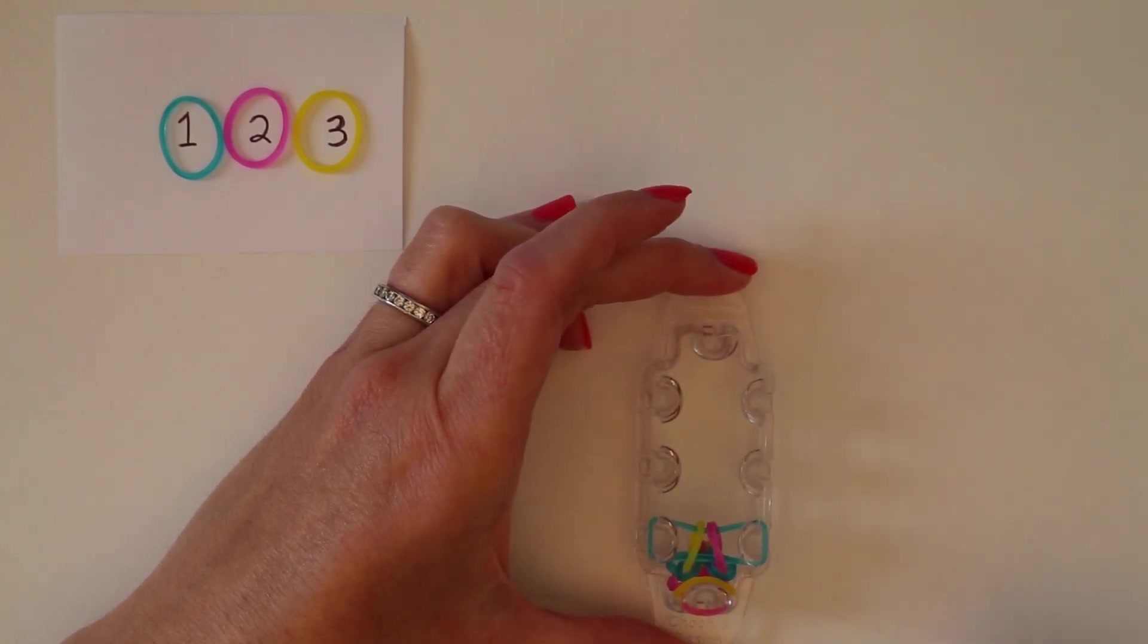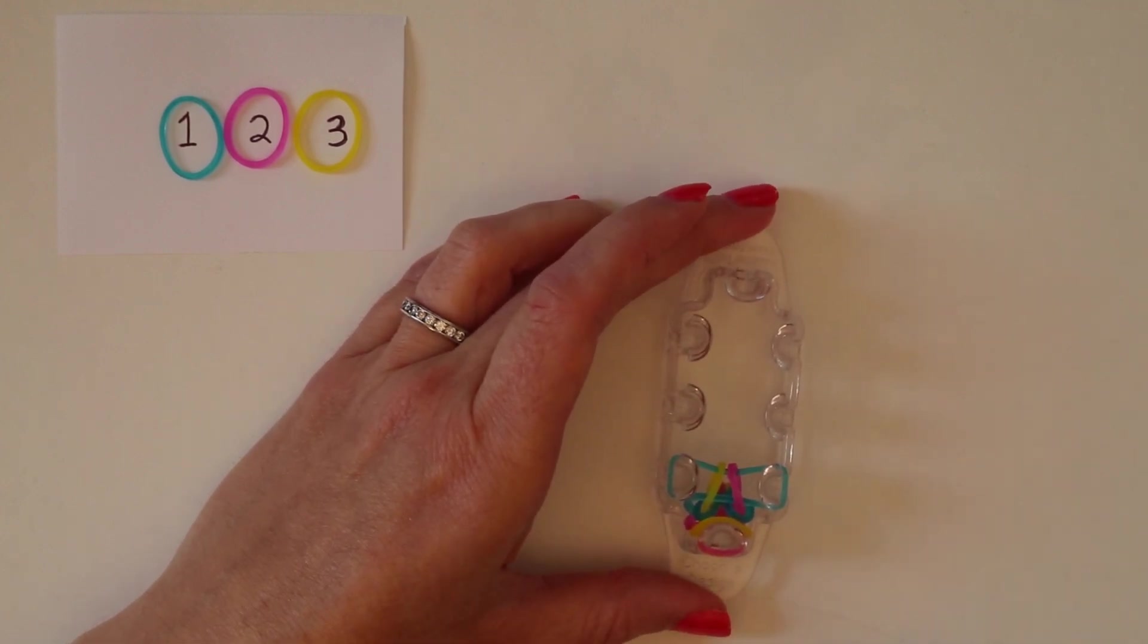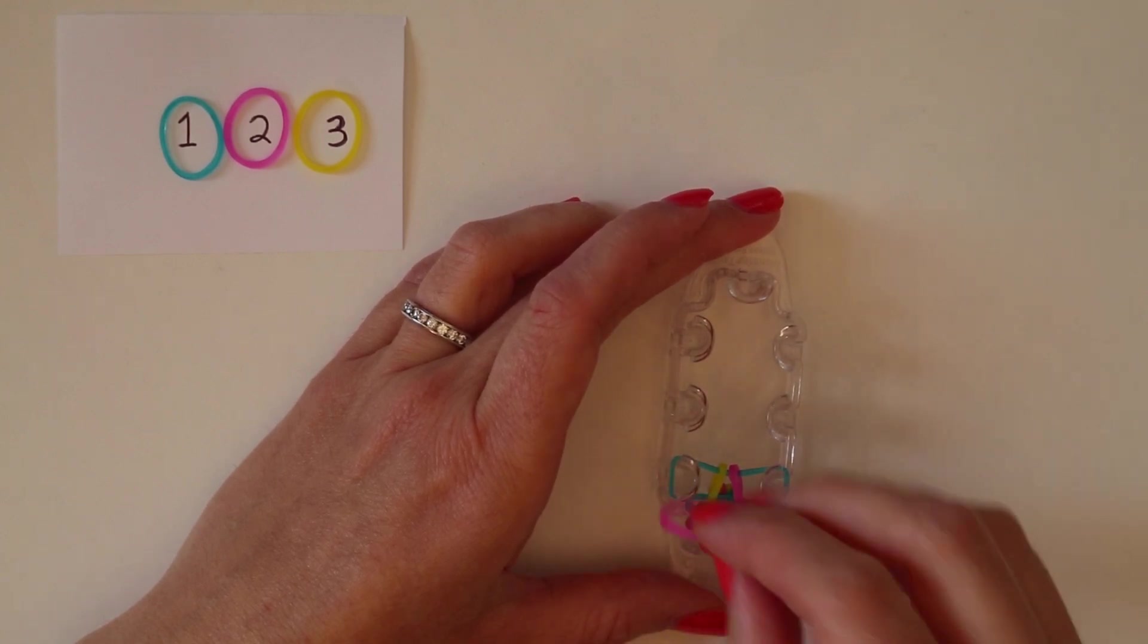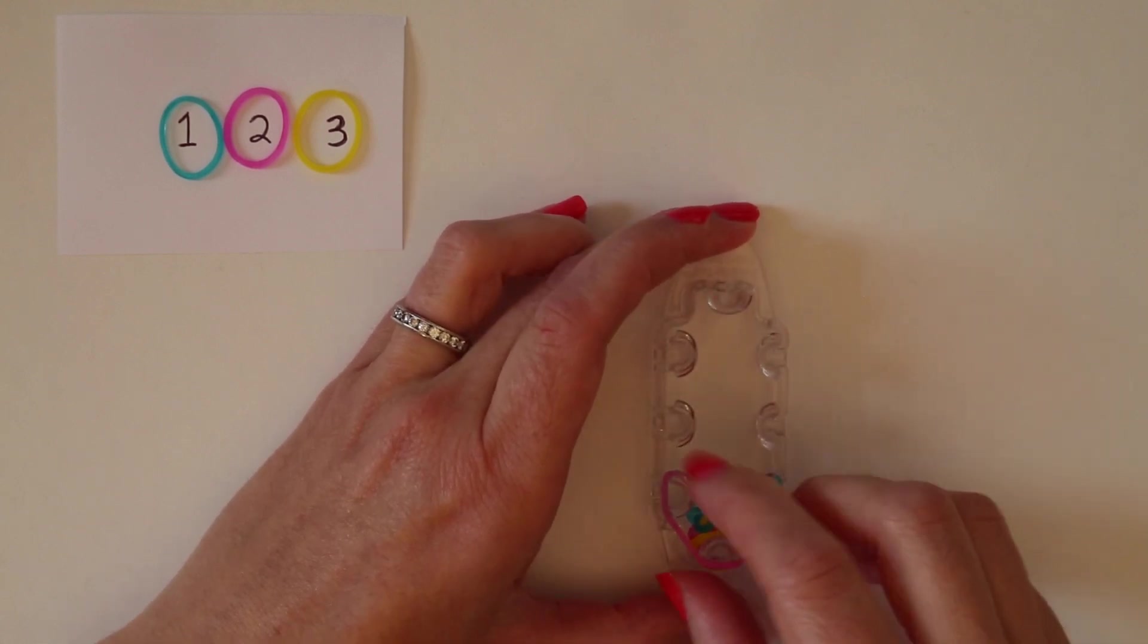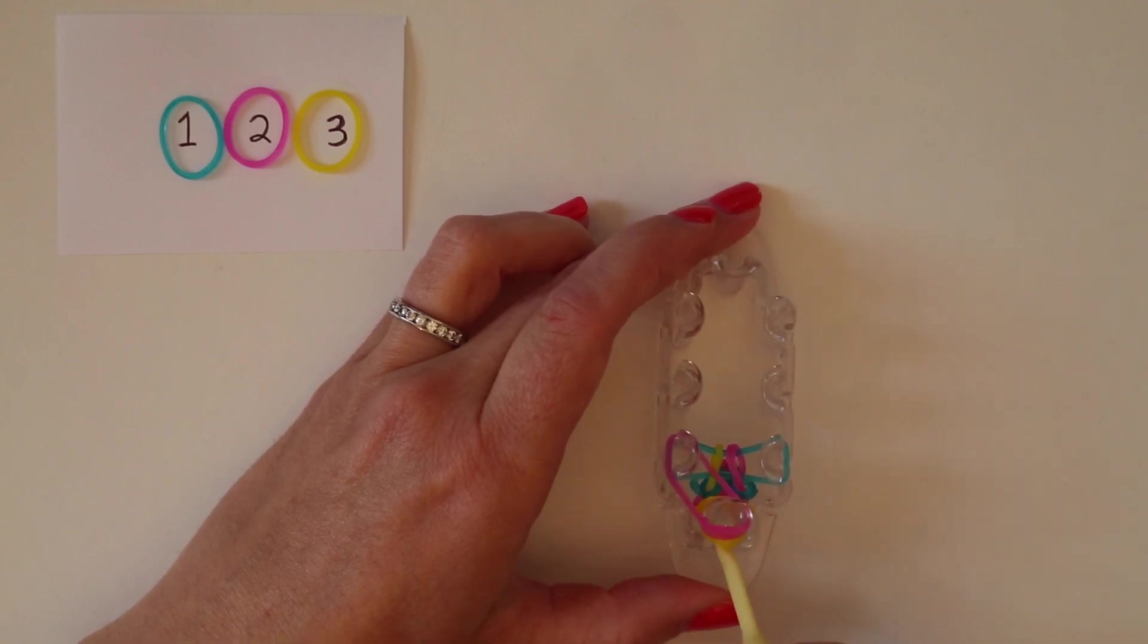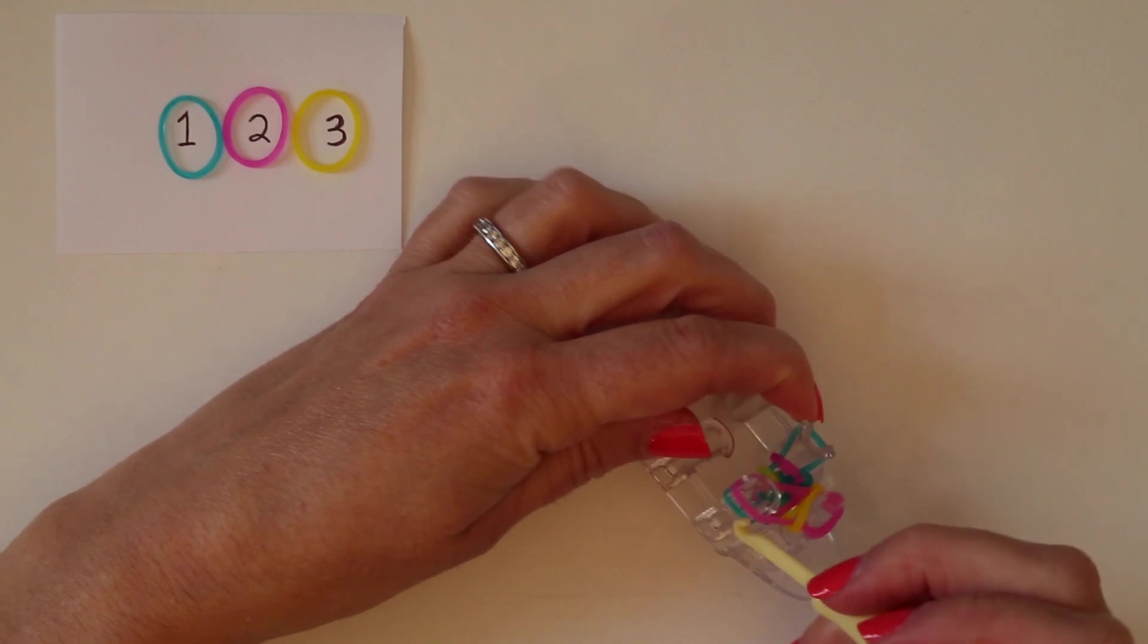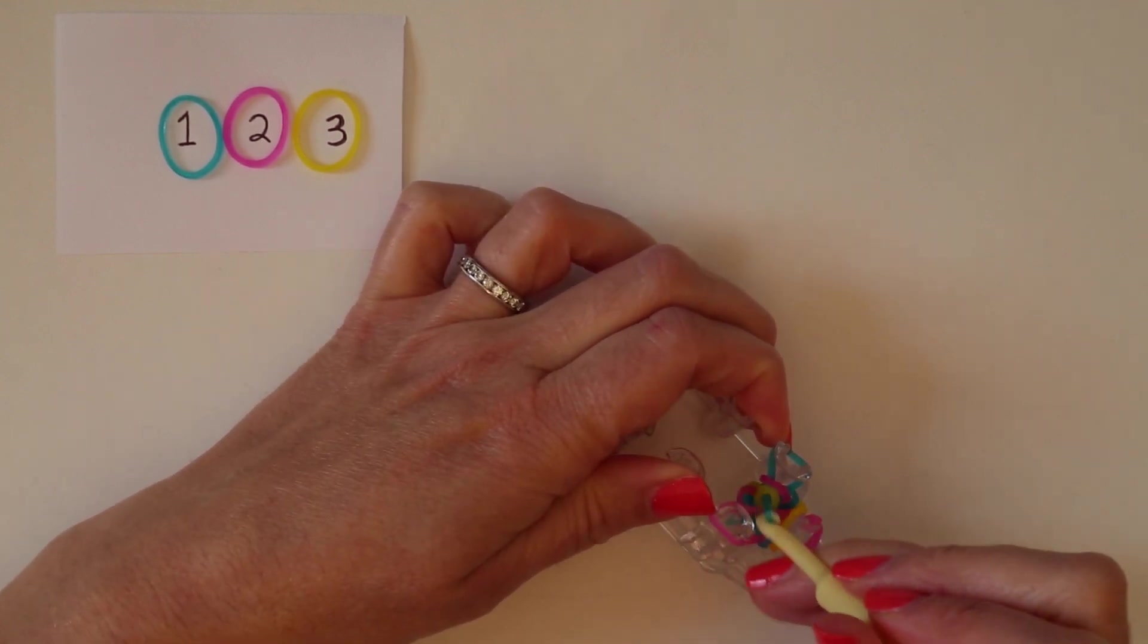And now, we're going to add bands one at a time to the left and the right, and we alternate which color we put. So, last time we put color three on this side, so this time we put color two. And then again, bring the bottom band up and over, and from here as well, the bottom band up and over.